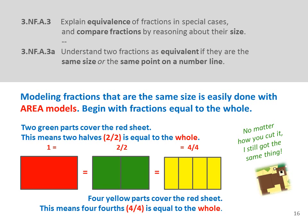This is exactly what the standards want us to teach next. 3NFA3 asks us to explain equivalence of fractions in special cases and to compare fractions by reasoning about their size. The standard on fraction equivalence is the last standard for grade 3, broken down into four sections. The first, 3NFA3A, states: understand two fractions as equivalent if they are the same size or at the same point on the number line. Let's begin with area models — children already know that 2 halves cover the same area as 1 whole, and that 4 fourths also equal 1 whole. Because they cover the same area, 2 halves and 4 fourths are equivalent.